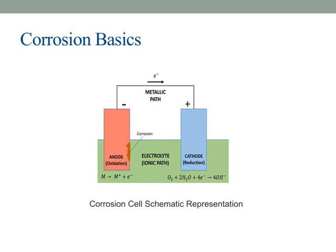Let's take a closer look at a schematic representation of a corrosion cell. As you can see here, the diagram illustrates how corrosion actually occurs at the microscopic level. Essentially, a corrosion cell consists of two different areas on a metal surface — one that acts as the anode and one that acts as the cathode. The anode is where oxidation happens, meaning metal atoms lose electrons and turn into ions. Meanwhile, the cathode is where reduction occurs, typically involving the gain of electrons by substances like oxygen or water.